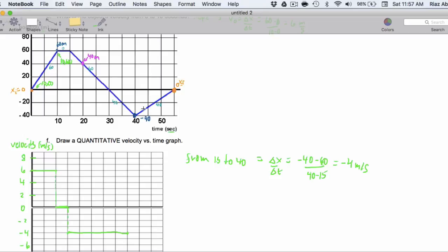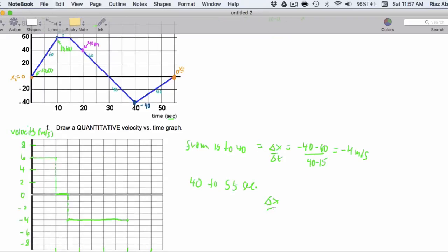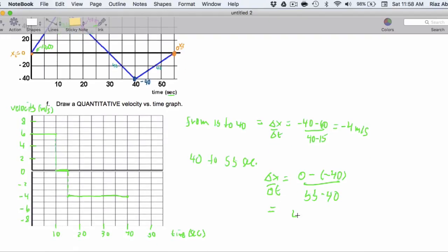And then, for the last part, let's get the slope from 40 to 55 seconds. So, that's going to be delta x over delta t. That's going to be 0 minus negative 40 over 55 minus 40. That's going to end up being 40 over 15, which ends up being 8 over 3, which is about 2.67 meters per second. Don't do the thing where you're like, 2.6 repeating. That's not something we do in engineering physics.